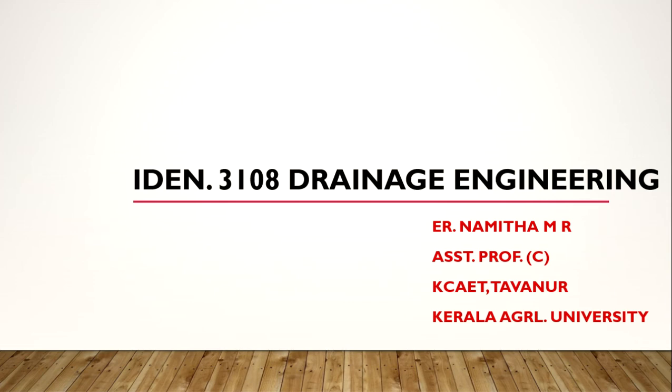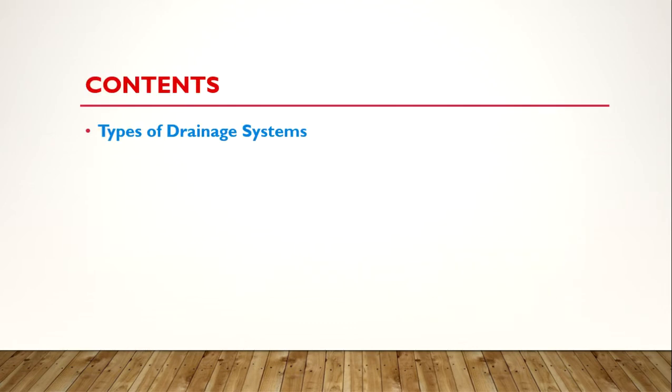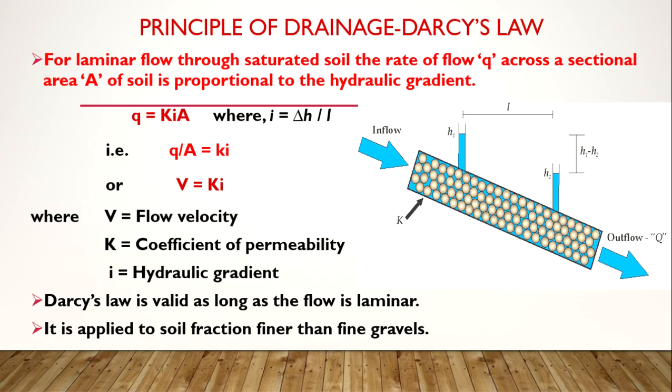In today's lecture we will move on to the different types of drainage systems. We have already discussed what drainage is — drainage is the removal of excess water, and the constructions which are used to remove excess water are known as drainage systems. There are different types of drainage systems. Before moving on to each type, we will see what is the principle behind drainage.